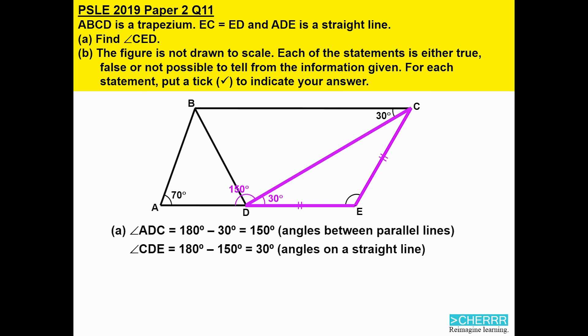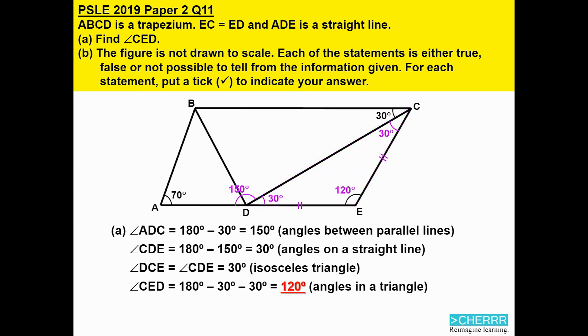Next, we look at angles in a triangle, and this happens to be an isosceles triangle, so there will be two angles that are exactly the same. They are DCE and CDE, so both of them are 30 degrees. Continuing from that, we will be able to solve for angle CED. Now we take 180 degrees minus 30 degrees minus 30 degrees, and we will get 120 degrees.